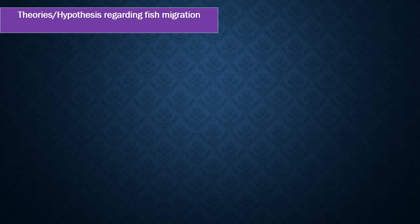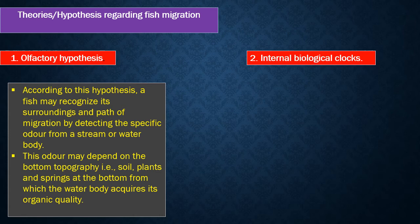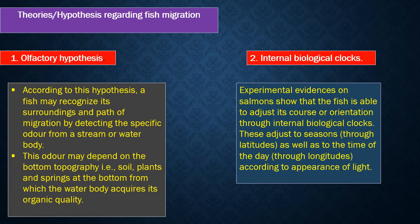There are many theories regarding fish migration. First, the olfactory hypothesis: a fish may recognize its surroundings and paths of migration by detecting the specific odor from a stream or water body. This odor may depend on the bottom topography, such as soils, plants, and springs from which the water body acquires its organic quality. Second, internal biological clocks: experimental evidence on salmon shows that the fish is able to adjust its course or orientation through internal biological clocks, which adjust to seasons as well as to the time of day according to the appearance of light.